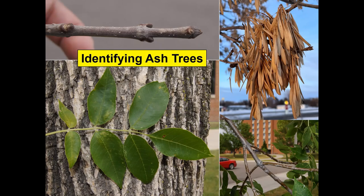In summary, identifying ash trees can be a little tricky, especially given the similarities between species and certain characteristics like branching type — that is, opposite versus alternate. However, when all those key characteristics are combined, identification becomes pretty straightforward. Thanks for watching.